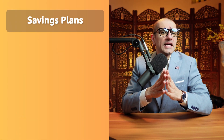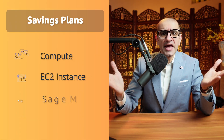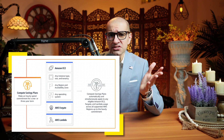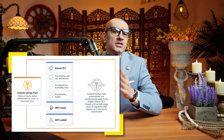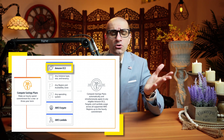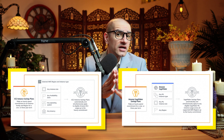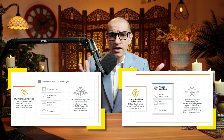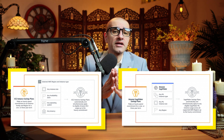Number 1. AWS offers 3 different types of savings plans: Compute, EC2 Instance, and SageMaker. Compute savings plans apply to usage across EC2, Lambda, and Fargate, whereas the EC2 Instance and SageMaker savings plans apply to EC2 and SageMaker usage respectively.